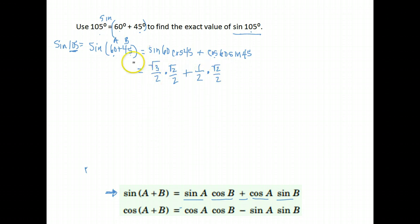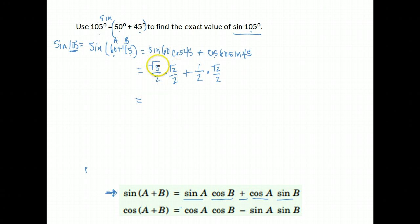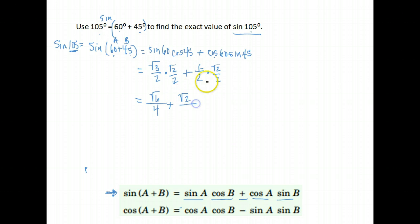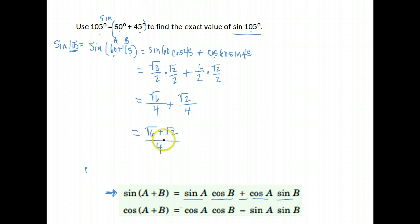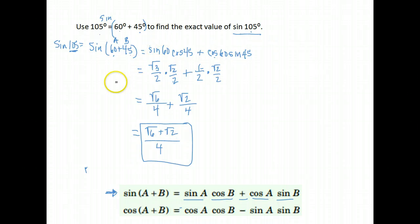Those are the exact values we've been learning from the beginning of the course, and you should have that table in your notes. Now we need to simplify as much as possible. The square root of 3 times the square root of 2 is the square root of 6, and in the denominator 2 times 2 is 4. Here, 1 times the square root of 2 is just the square root of 2, and 2 times 2 is 4. We have a common denominator, so we can add those. We can't add root 2 and root 6, so we leave them. The square root of 6 plus the square root of 2 over 4 is the sine of 105 degrees.